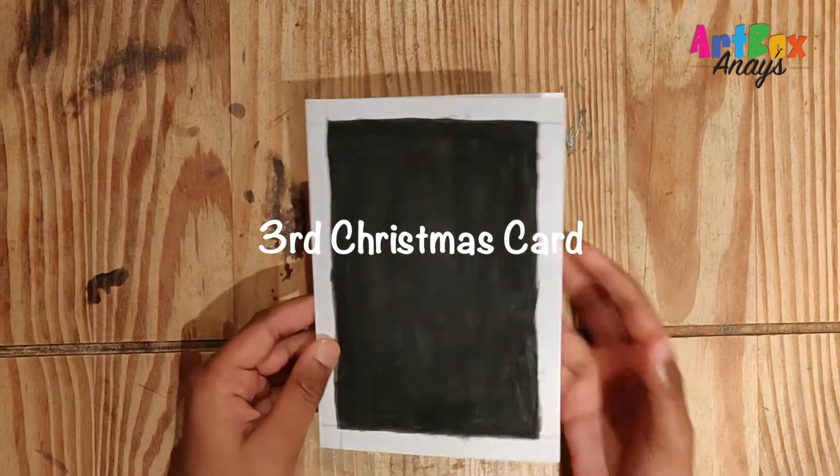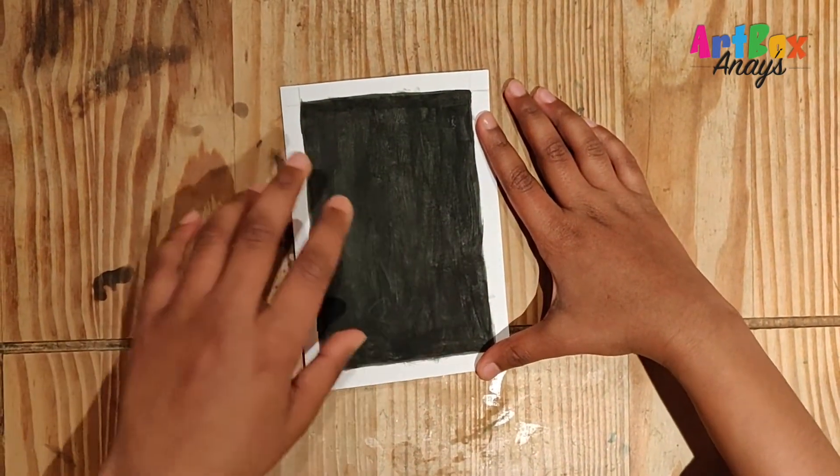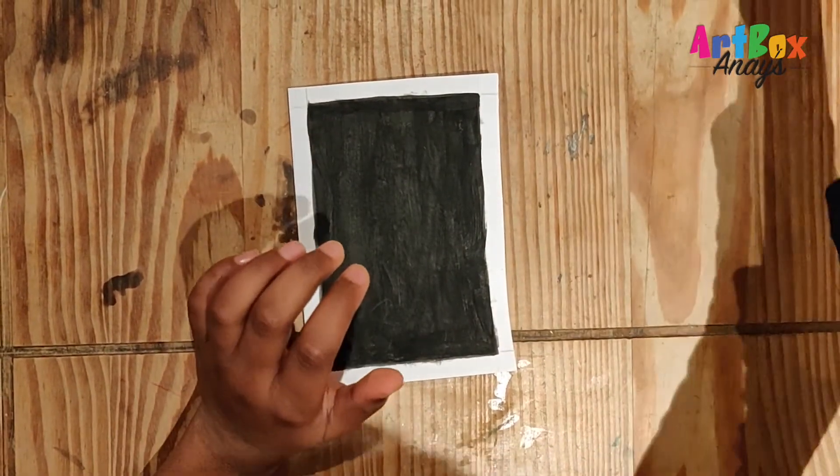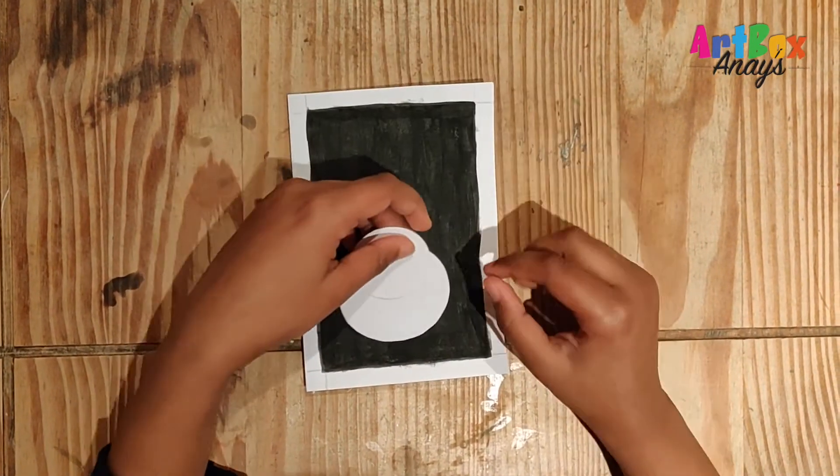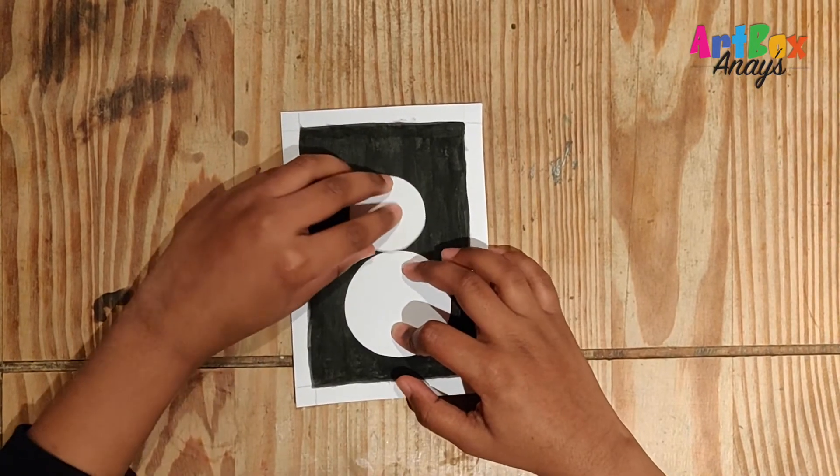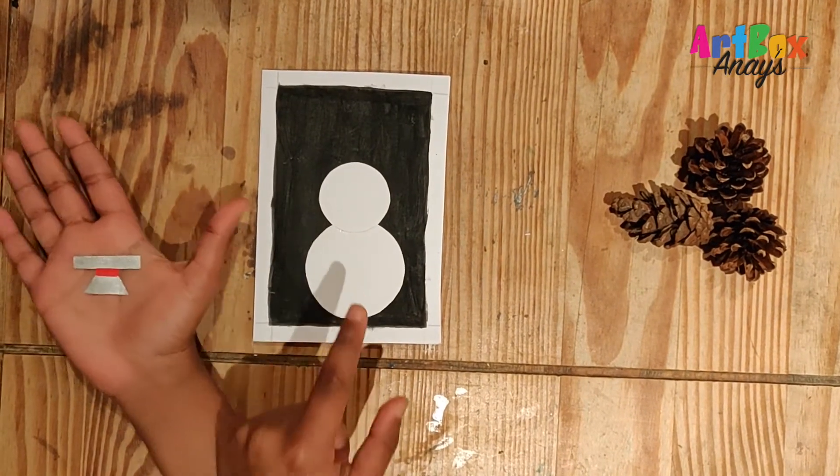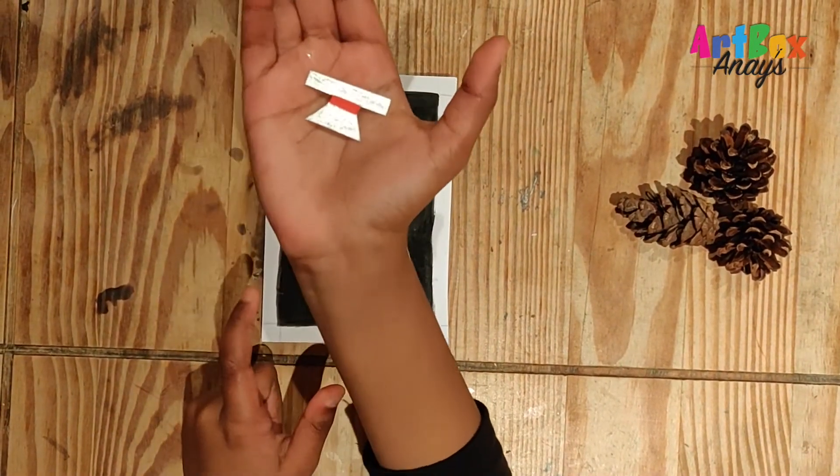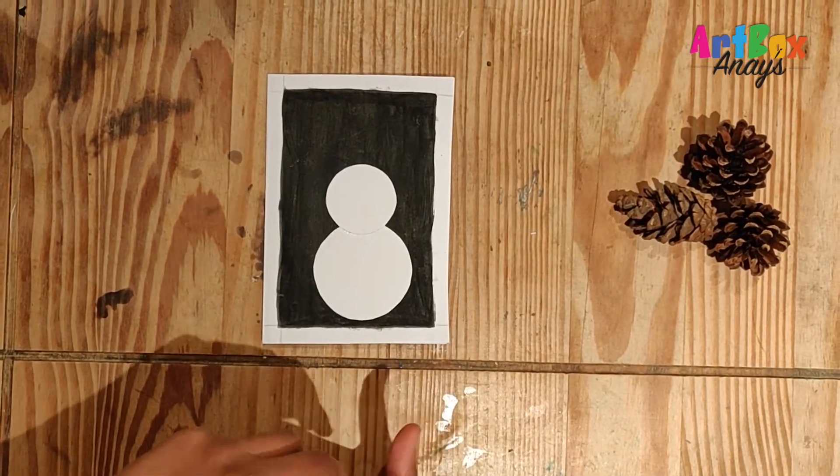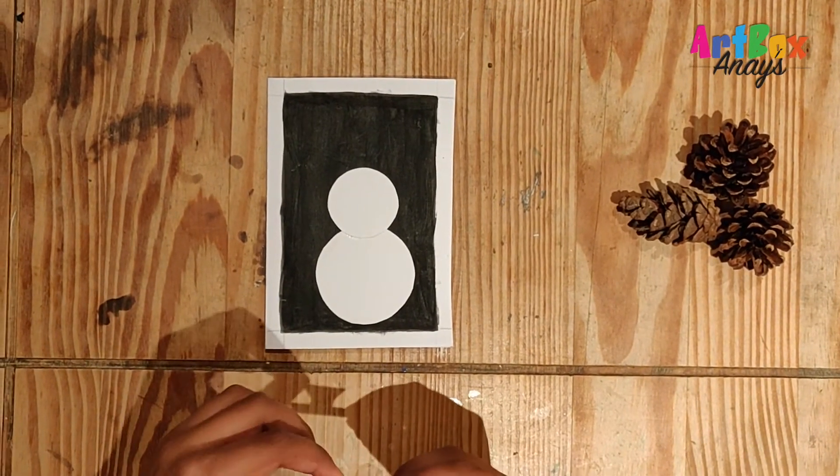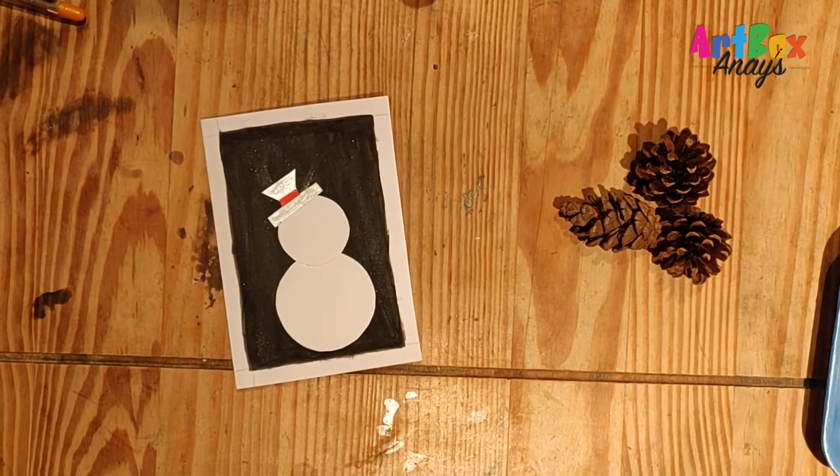Now I have colored the inside square, a rectangle, with black paint. And I have cut two circles, one is bigger than the other, and now we are going to stick them like this to form a snowman. Now guys, as you can see this is done and I have made this little snowman hat for my snowman. And now I am just going to stick it down here like this. Okay, now guys, this is looking beautiful.